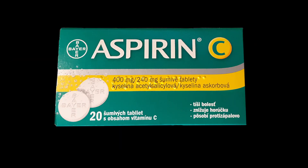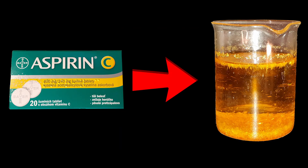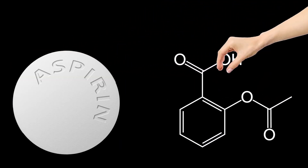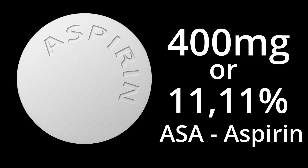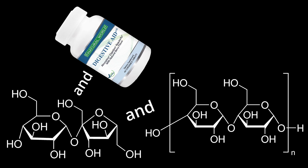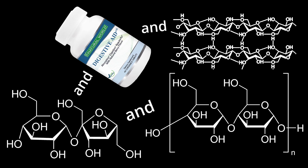Before we start turning the aspirin into picric acid, we have to get the aspirin from the tablet. One of these aspirin tablets contains only 400mg, or 11.11% aspirin. The rest is mostly starch, sugars, digestive aids, and other binding agents. To get the ASA from the tablets, we perform a solvent extraction.